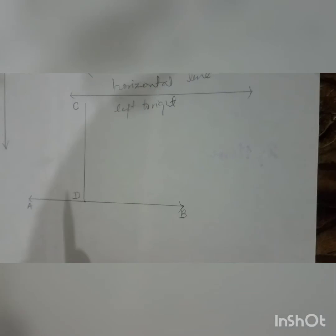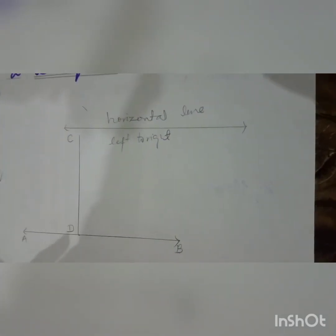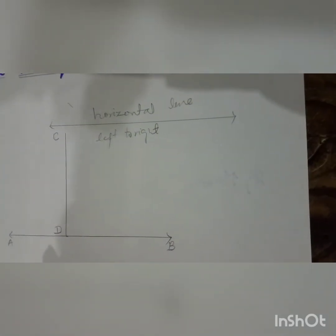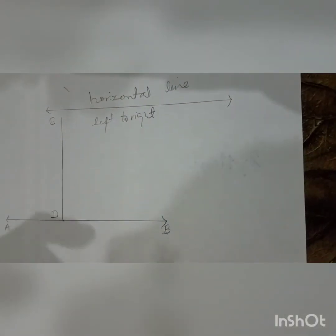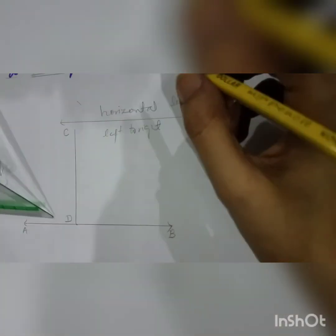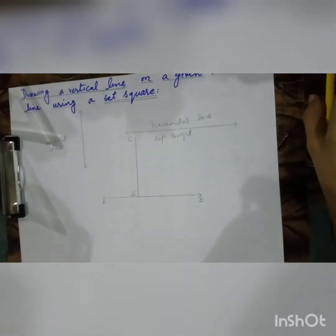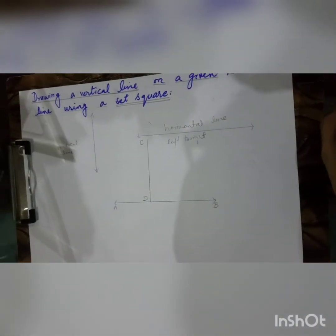So this is today's video — all about how to draw a vertical line on a given horizontal line using a set square. I hope you have understood this concept. Thank you so much, see you in the next video.